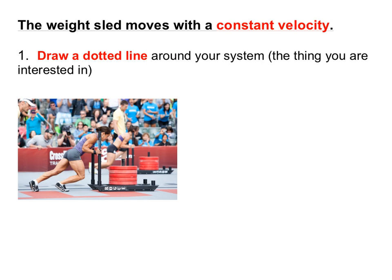Okay, so here we have a CrossFit athlete pushing a weight sled that's moving with a constant velocity. So the thing that we want to do first is draw a dotted line around the system. In this case the system is the weight sled because that's the thing that we're interested in. It's moving with a constant velocity. So there's our dotted line.